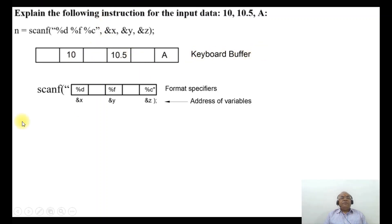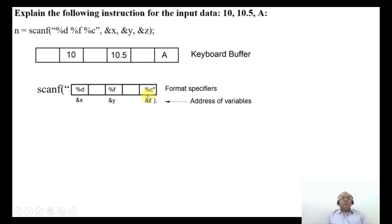The keyboard buffer data is converted by the format specifiers: 10 is an integer so it maps to %d, 10.5 is a floating point number so it maps to %f, and 'a' is a character so it maps to %c. These are the addresses of variables &x, &y, and &z, and n equals 3.